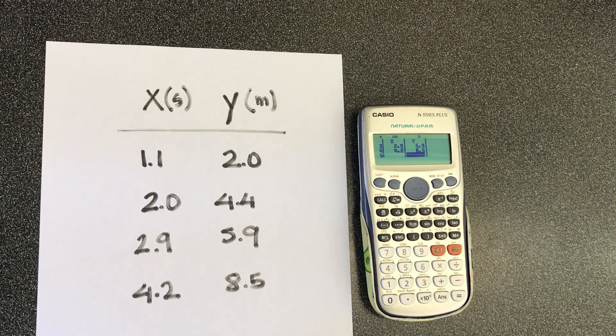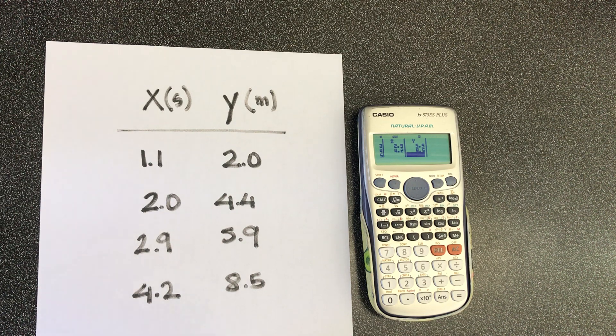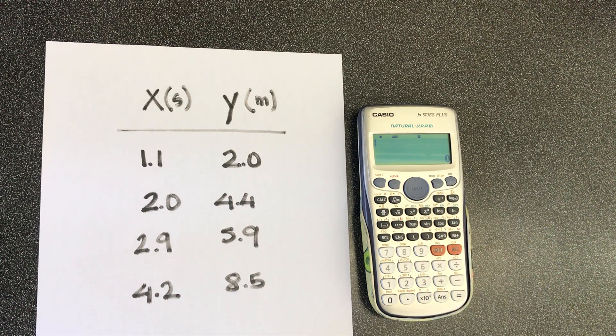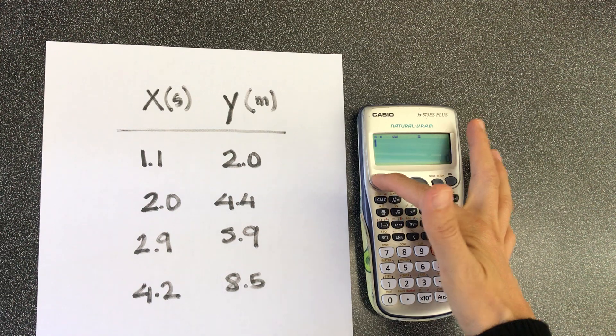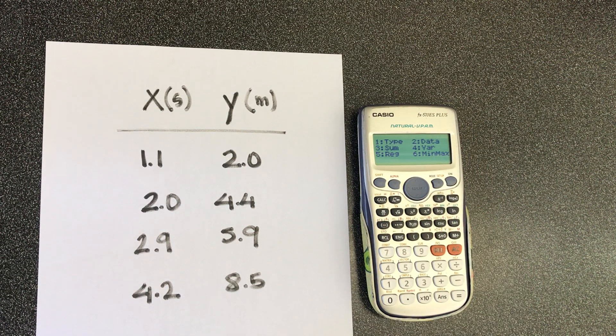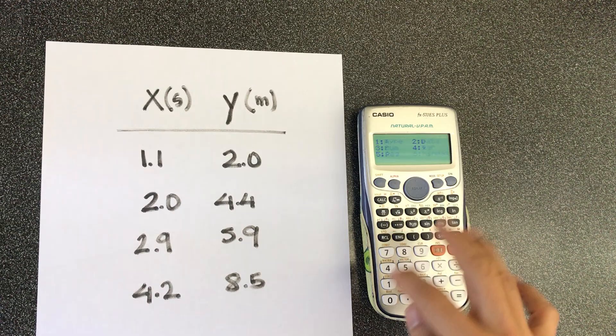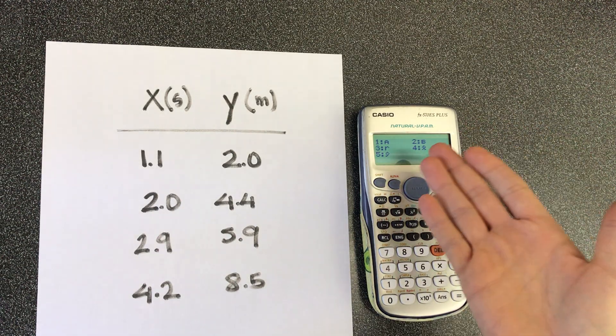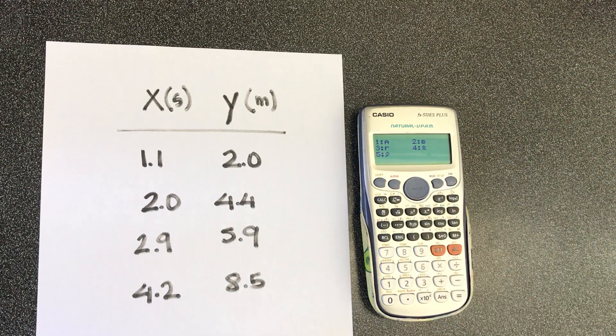When you're done, there's a very important step that you shouldn't miss. You should click on AC. Then you do shift 1 to go into the stats. Go into regression, which is item 5. And here, you will see displayed a, b, and r.